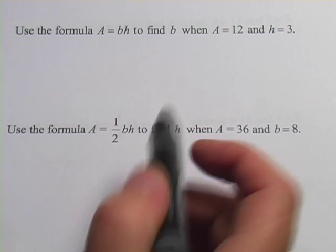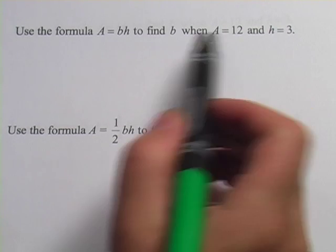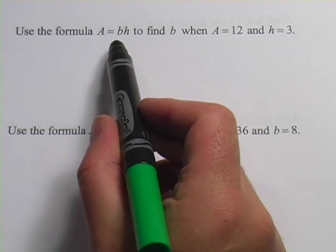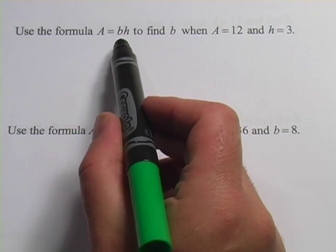In these problems, what we have to do is take some values and substitute them into a formula and then solve for the variable that we don't have a number for.